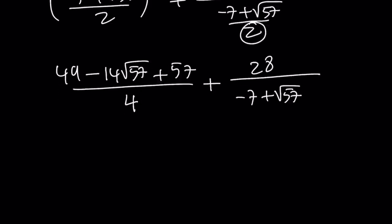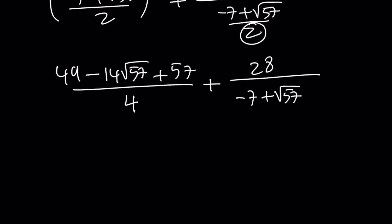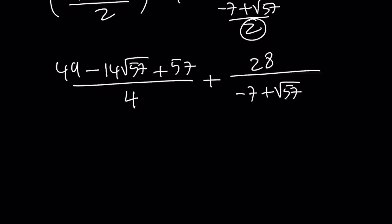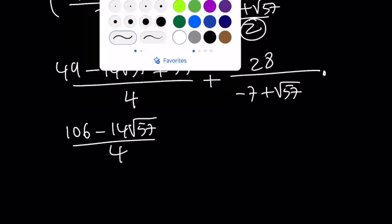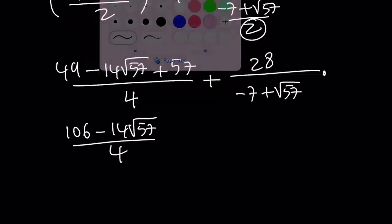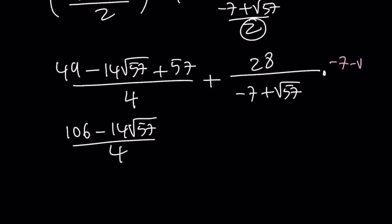I would like to rationalize the denominator for the second fraction, and obviously I want to simplify the first one. So 49 plus 57 is going to be 106 minus 14 root of 57 divided by 4. If you multiply this by the conjugate, you're going to get negative 7 minus root of 57.